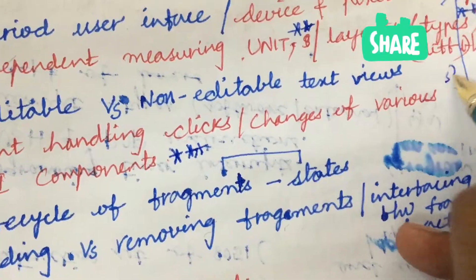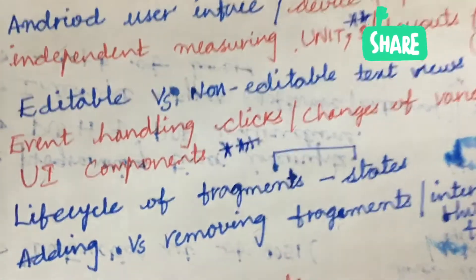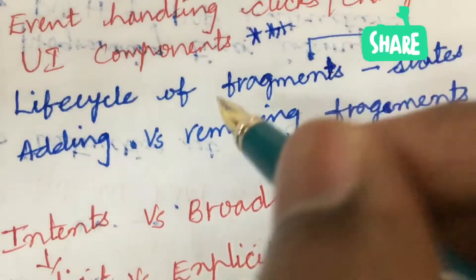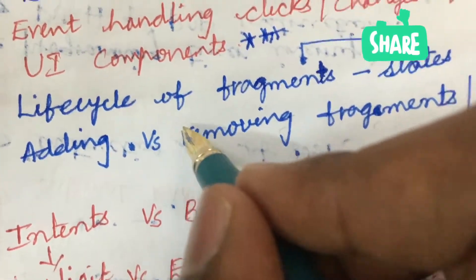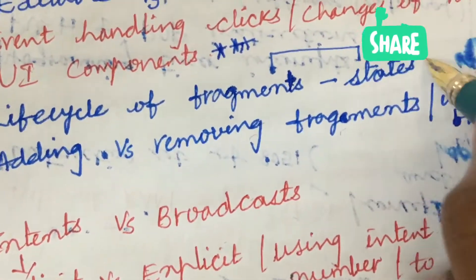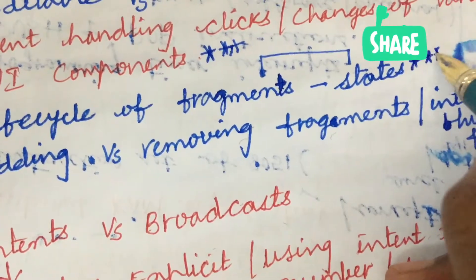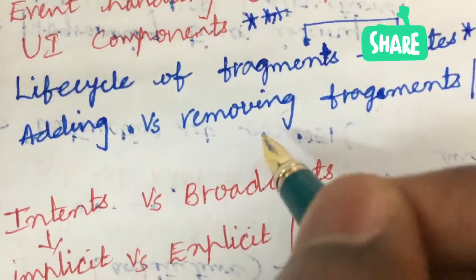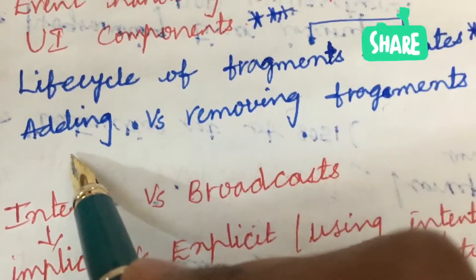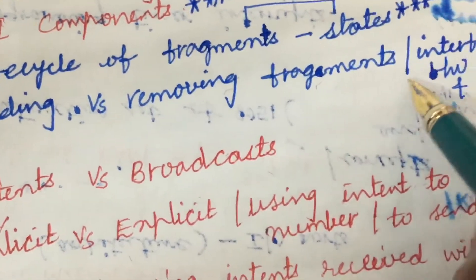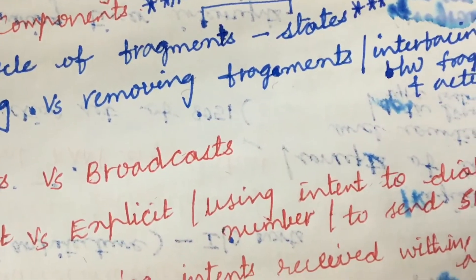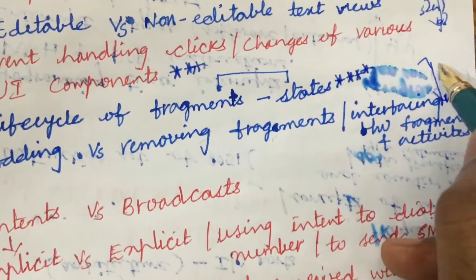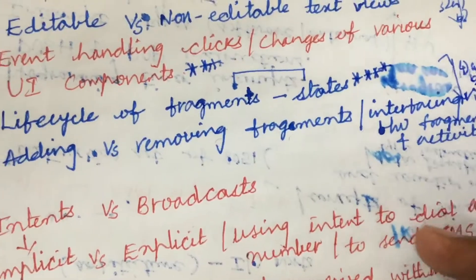From this part we may be getting 3A as well as 3B, dear students. Please concentrate on each and every part I am highlighting here. Explain in detail the life cycle of fragments and what are the different types of fragment states — this may also be one of the gunshot questions. The differences between adding and removing fragments, as well as interfacing between fragments and activities, may be the B question. From these two parts we will be getting 4A as well as 4B.